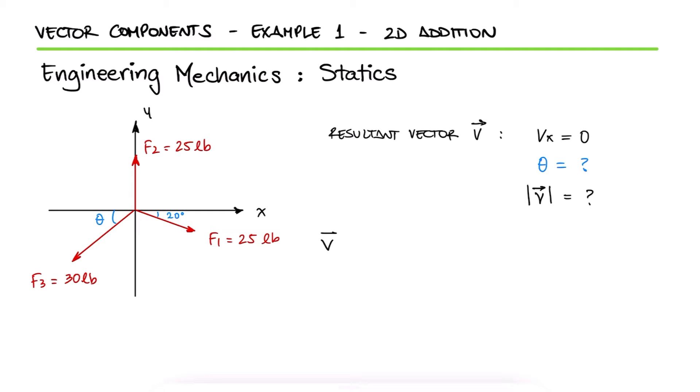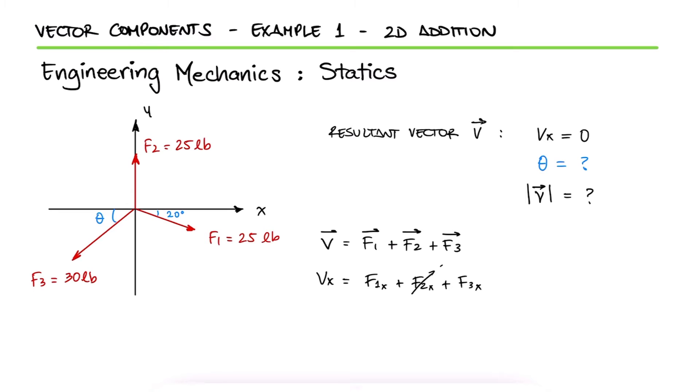If the resultant vector v is the addition of the force vectors f1, f2, and f3, it means that the x component of the resulting vector is equal to the x component of those three vectors. Since f2 is a vertical vector, its horizontal component is zero.